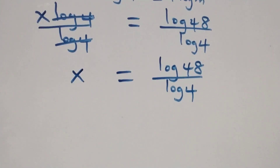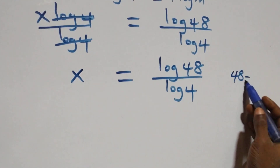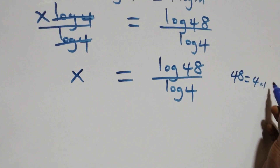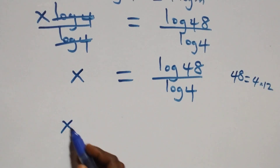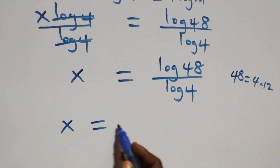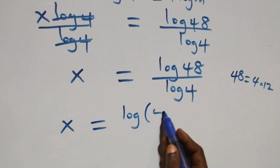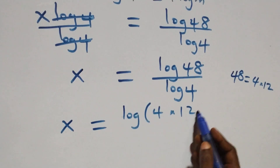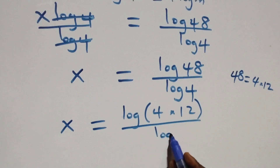The next step here, we can express 48 as 4 times 12. That is, what we have here becomes x equals to log of 4 times 12 over log 4.